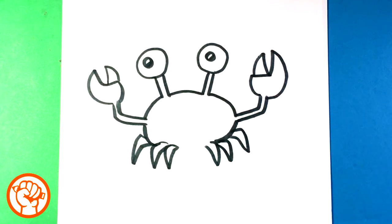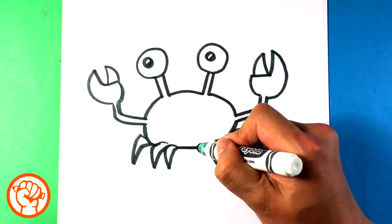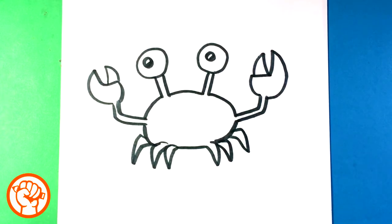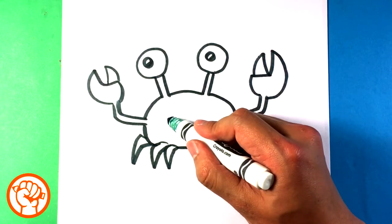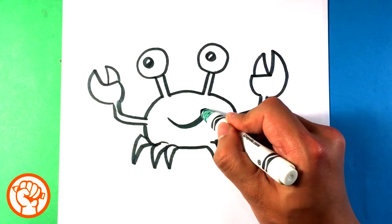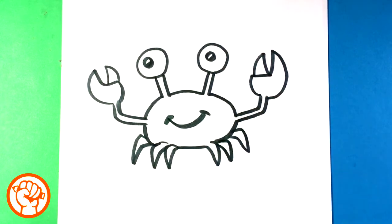We draw six legs. I'm gonna pull across the bottom, then I'm gonna draw a little smile. That slippery crab.